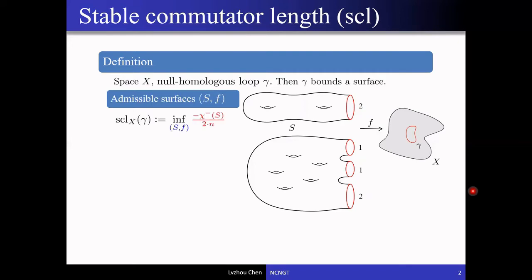The stable commutator length is defined to be the minimal complexity of these admissible surfaces. For each admissible surface, its complexity is negative chi-minus divided by two times the degree. Here, chi-minus is almost the Euler characteristic of the surface, but we need to remove disk and sphere components before taking the Euler characteristic.